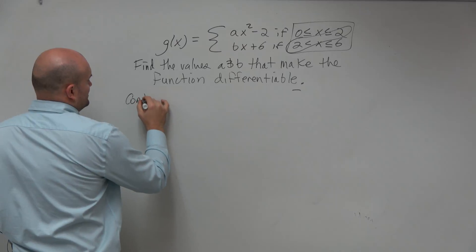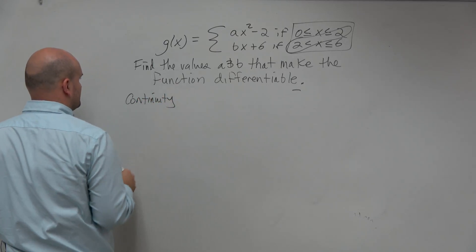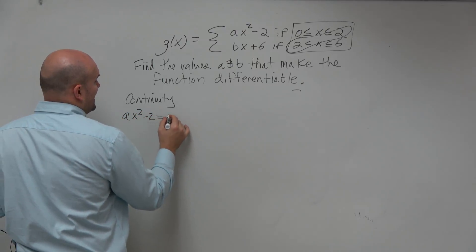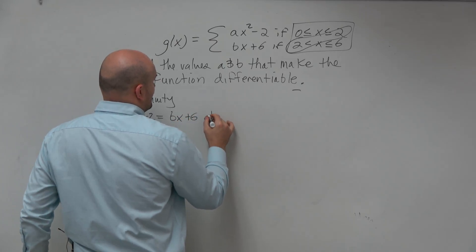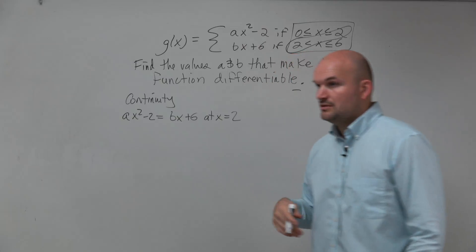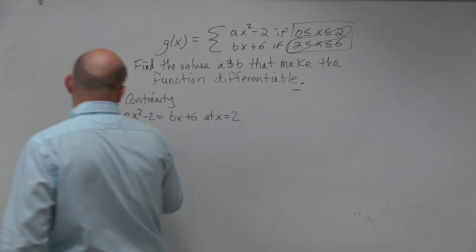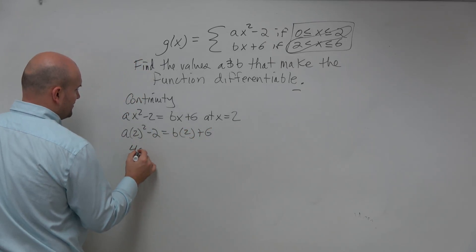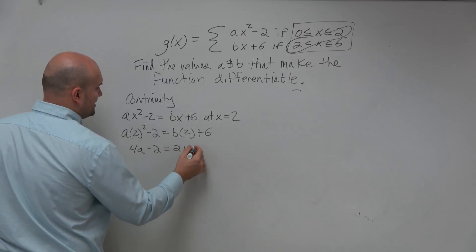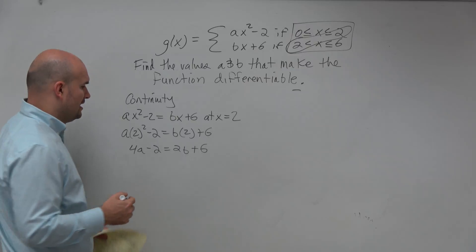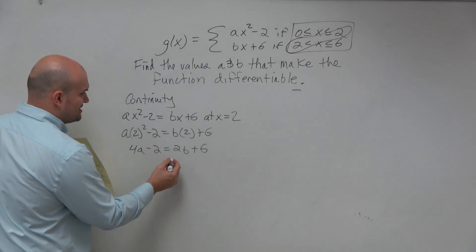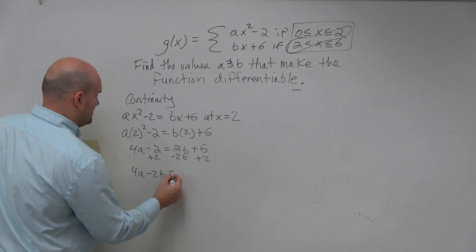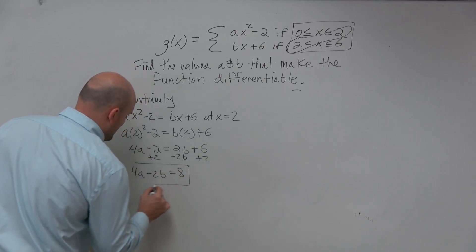So I'm going to say continuity. And for continuity, that means ax squared minus 2 has to equal bx plus 6 at x equals 2. So we're going to enter into a times 2 squared minus 2 equals b times 2 plus 6. Go ahead and simplify. You get 4a minus 2 equals 2b plus 6. We could simplify this. Usually we want to get the variables to the same side. So I'll subtract 2b and I'll add 2 on both sides. So I have 4a minus 2b equals 8. That is my equation number 1.